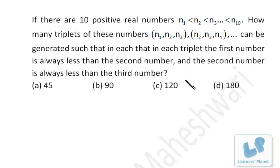How many triplets of these numbers (n₁, n₂, n₃), (n₂, n₃, n₄), etc., can be generated such that in each triplet the first number is always less than the second and the second number is always less than the third? That means n₁ < n₂ < n₃.